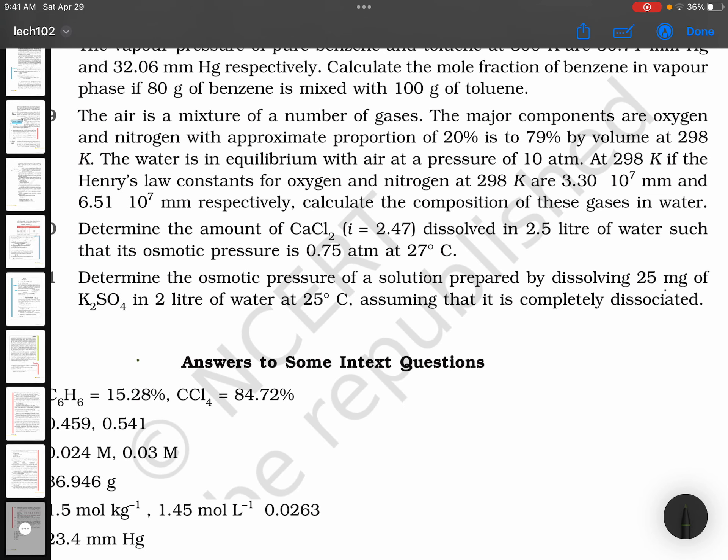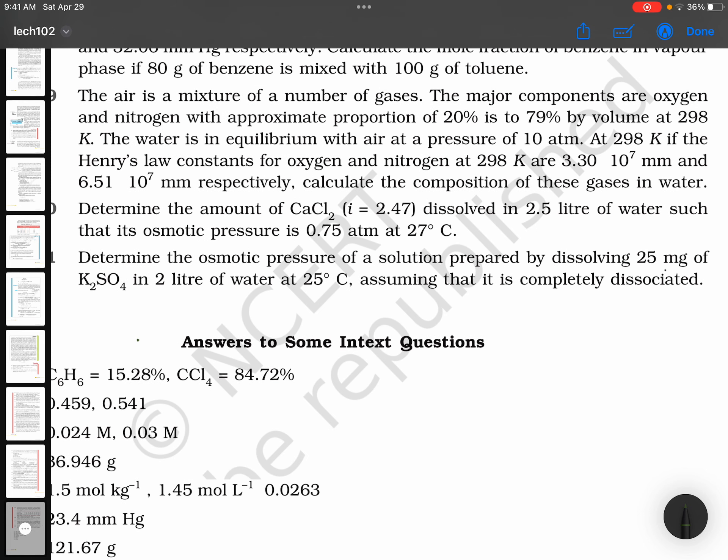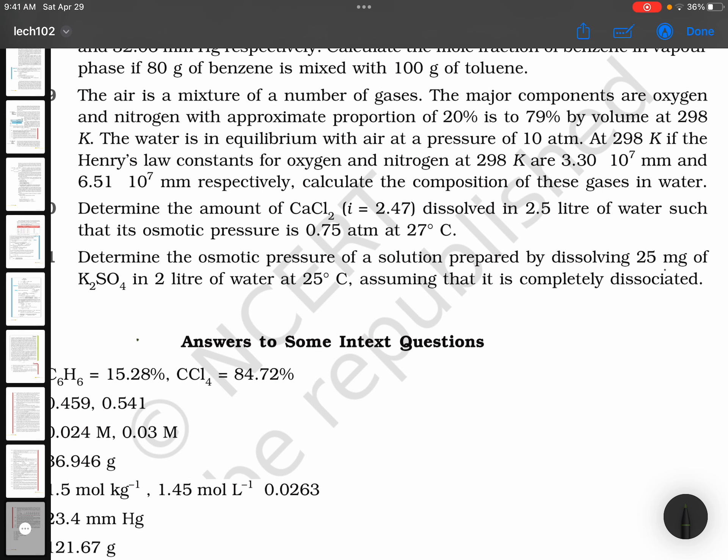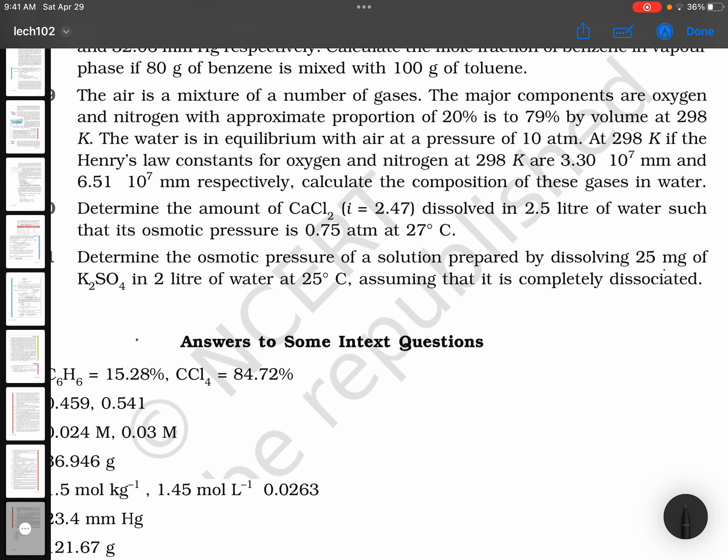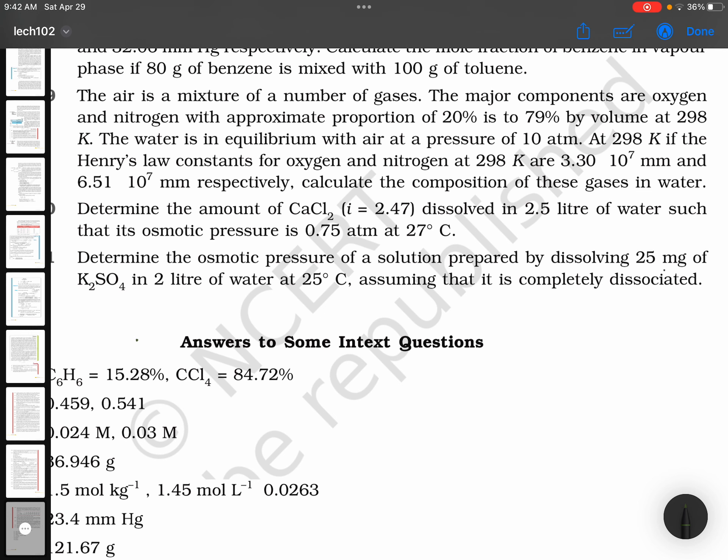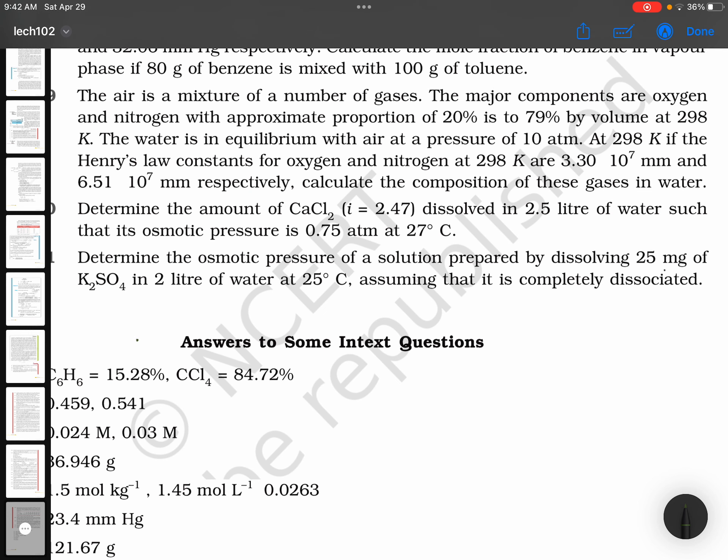The major components are oxygen and nitrogen with approximate proportions of 20% and 79% by volume. At 298 Kelvin, the water is in equilibrium with air at a pressure of 10 atmospheres. At 298 Kelvin, the Henry's law constants of oxygen and nitrogen are given. Calculate the composition of these gases in water.